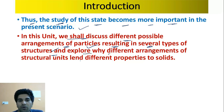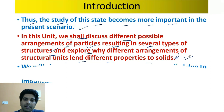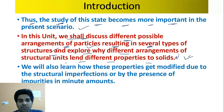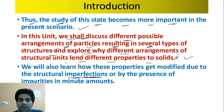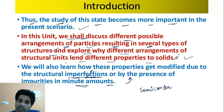We will explore why different arrangements of structural units lend different properties to the solid. We will also learn how these properties get modified due to structural imperfections. For example, in semiconductors, we add impurities to modify their properties.